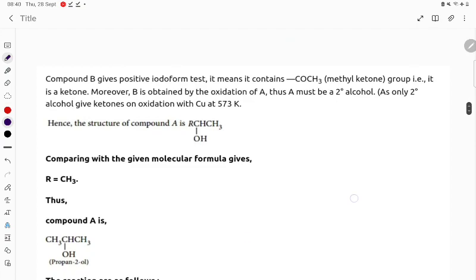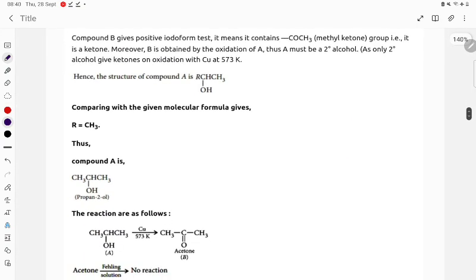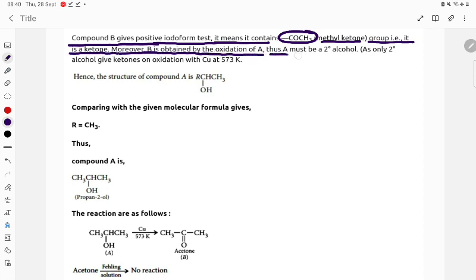Compound B gives positive iodoform test, it means it contains COCH3 methyl ketone group. Moreover, B is obtained by oxidation of A, thus A must be a secondary alcohol, as only secondary alcohols give ketones on heating with copper at 573 kelvin.